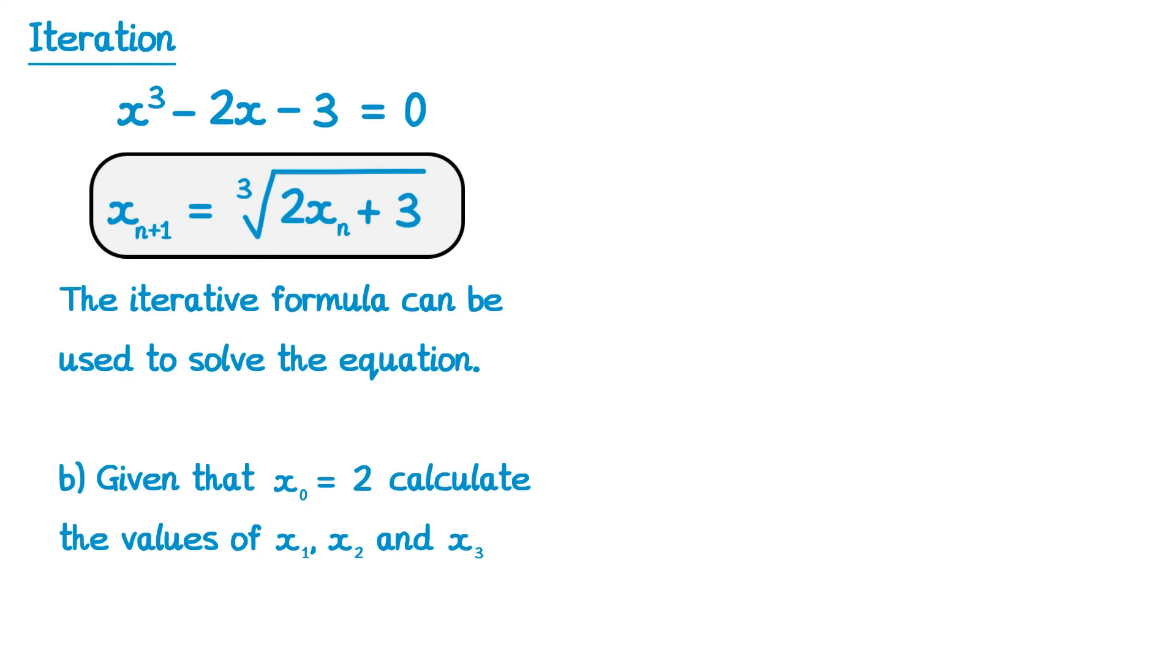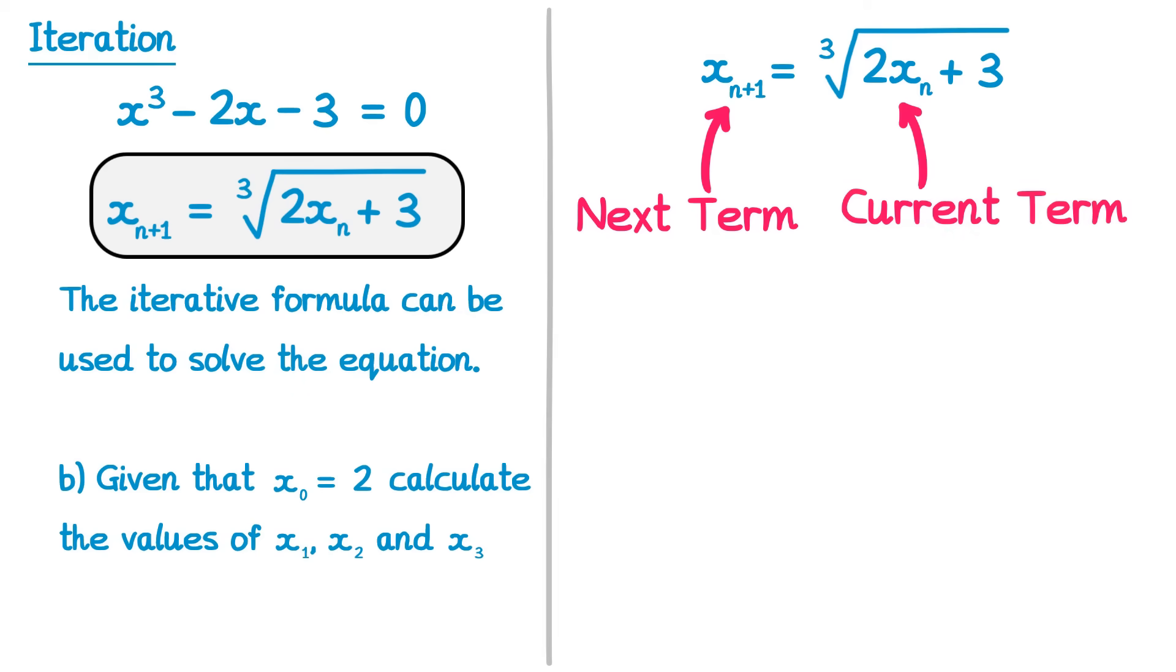The follow-up question could look something like this. The iterative formula can be used to solve the equation. Part b, given that x0 equals 2, calculate the values of x1, x2, and x3. Now, to understand how to do this, you need to understand what an iterative formula is. xn plus 1 here refers to the next term of a sequence of terms, whereas xn refers to the current term we're on.